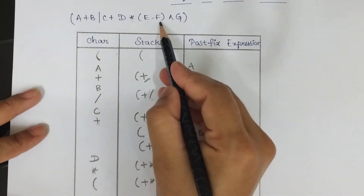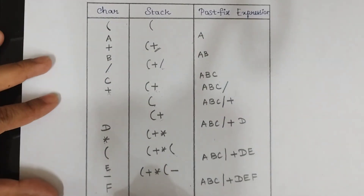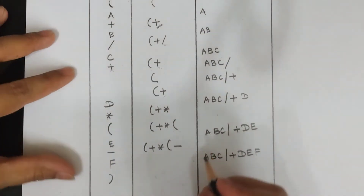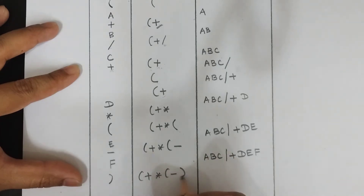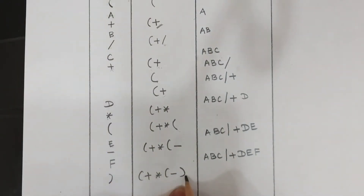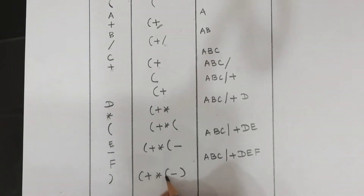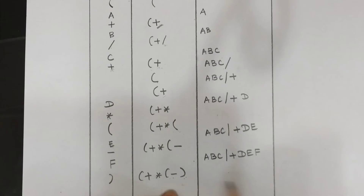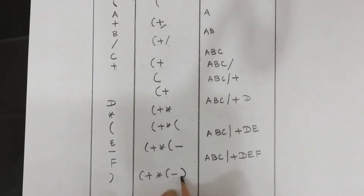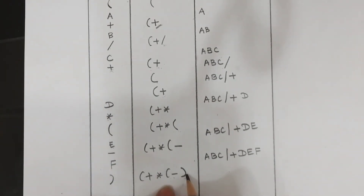The next character is close parenthesis. When you encounter close parenthesis, the rule is: until the first open parenthesis, whatever operators are present in between should all be popped out from the stack and added to the postfix expression. Here, the immediate open parenthesis is the inner one.